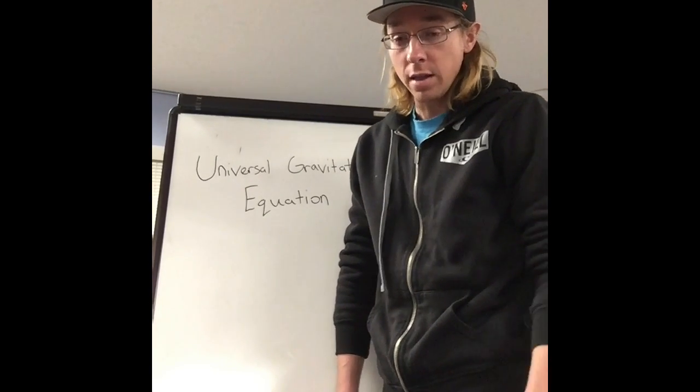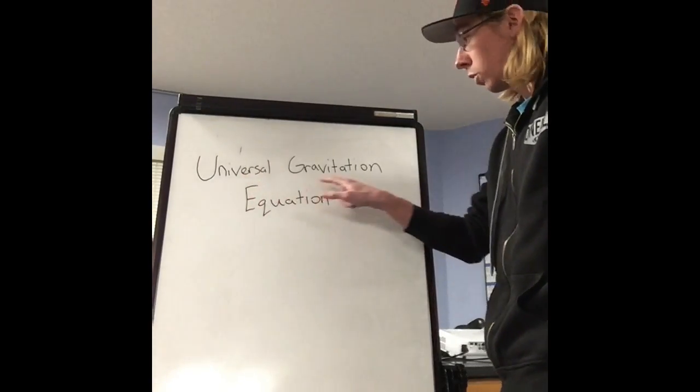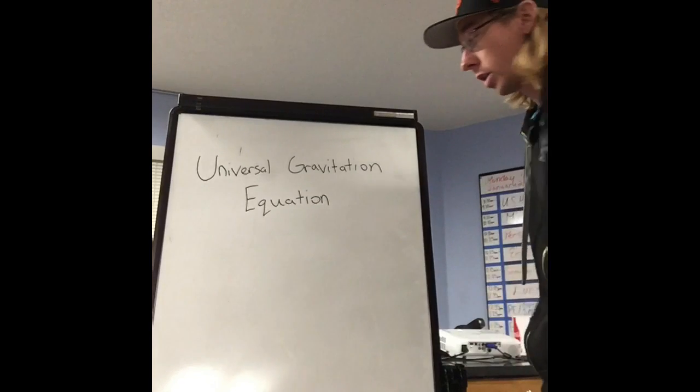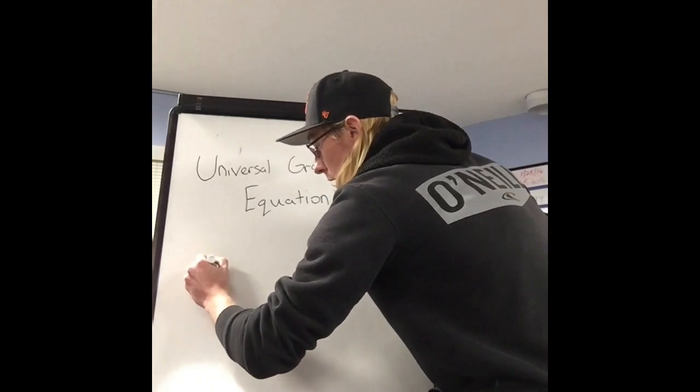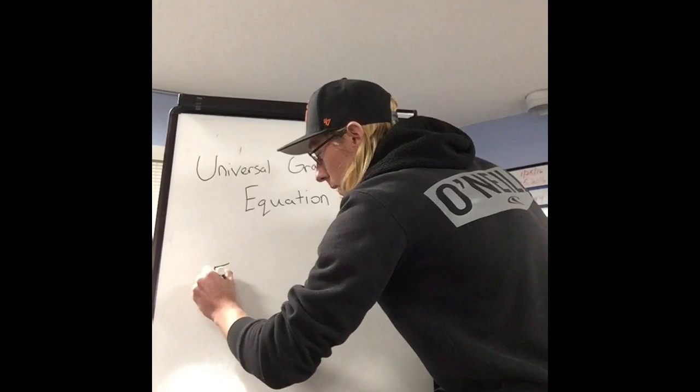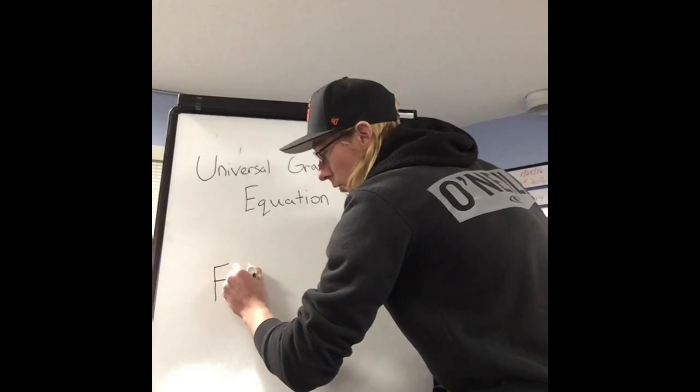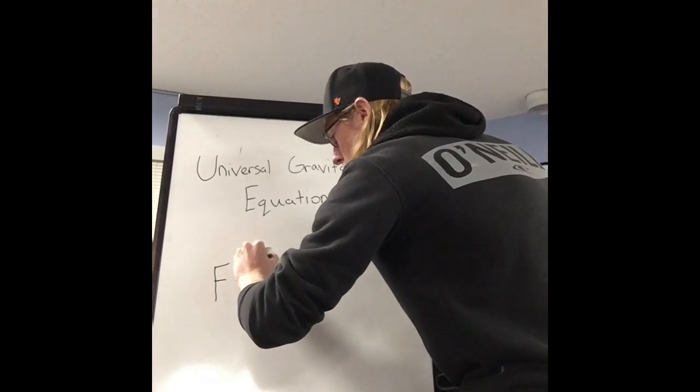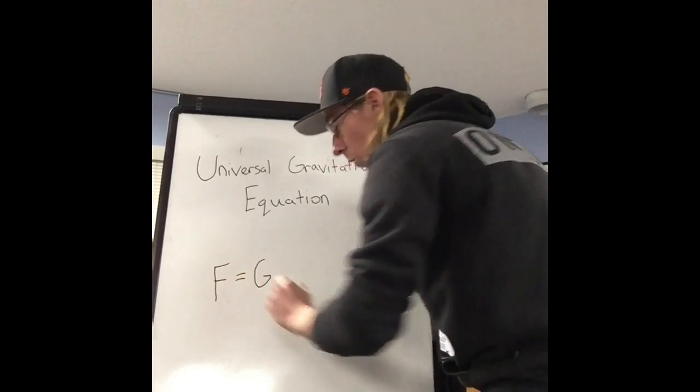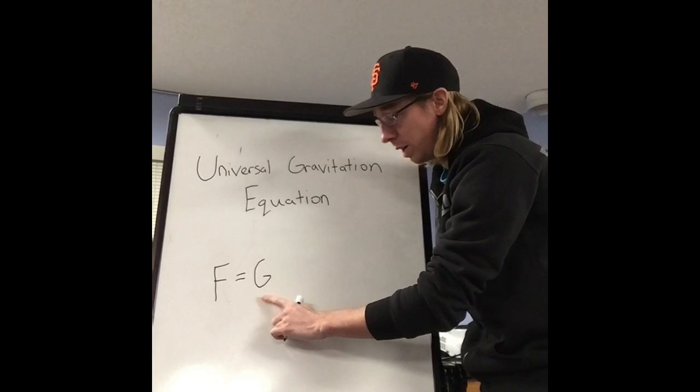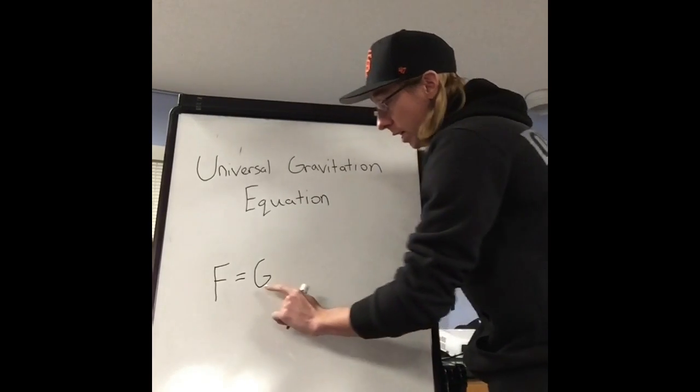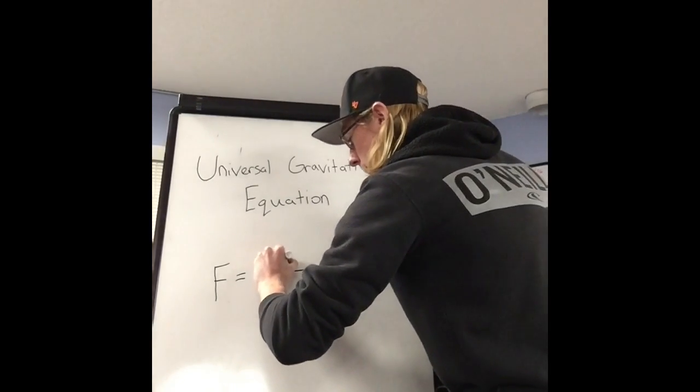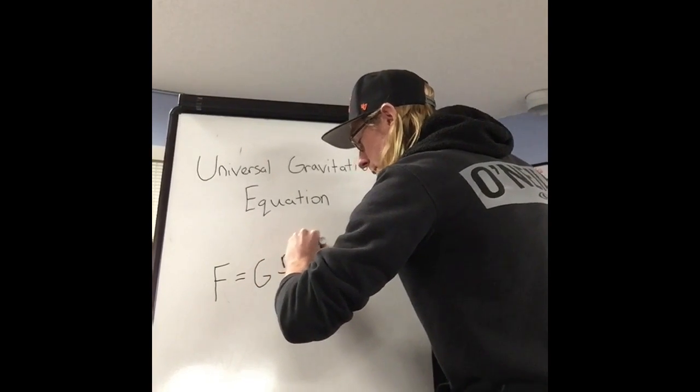Newton came up with an equation that allows you to calculate the force of this gravity. The equation is called the universal gravitation equation, and here's how it works. It starts off as force, using the letter F to represent force. So the force of gravity equals the constant G. I call it a constant because it'll always be the same number, and I'll talk more about that in a second.